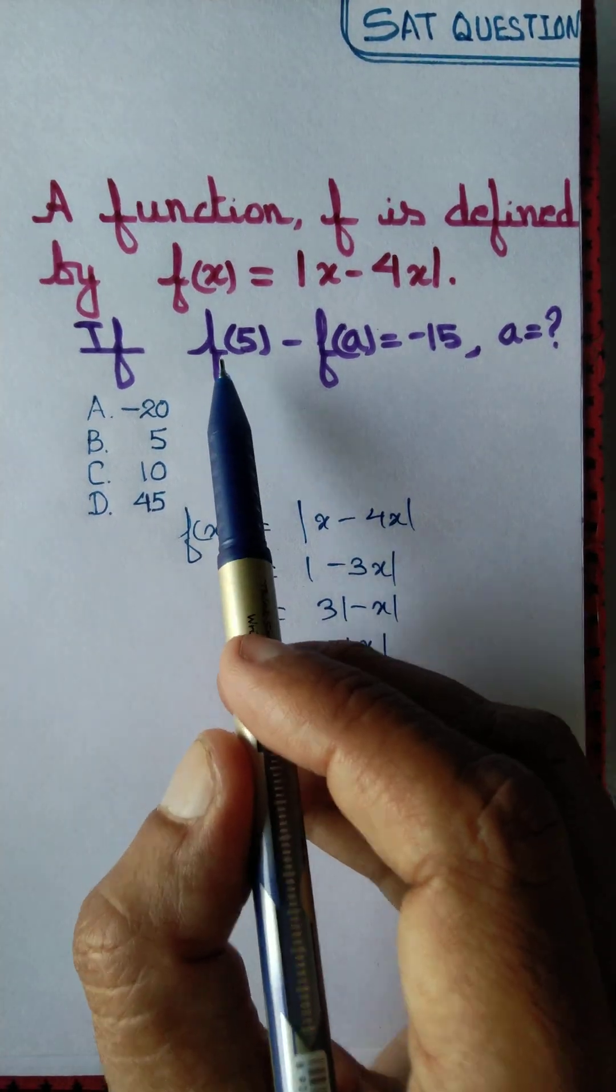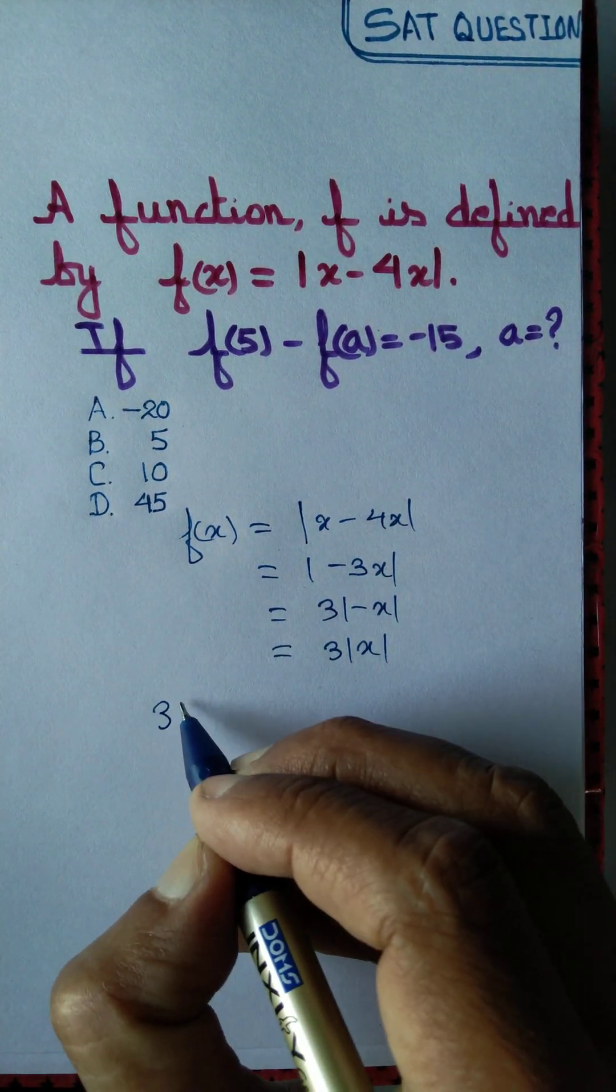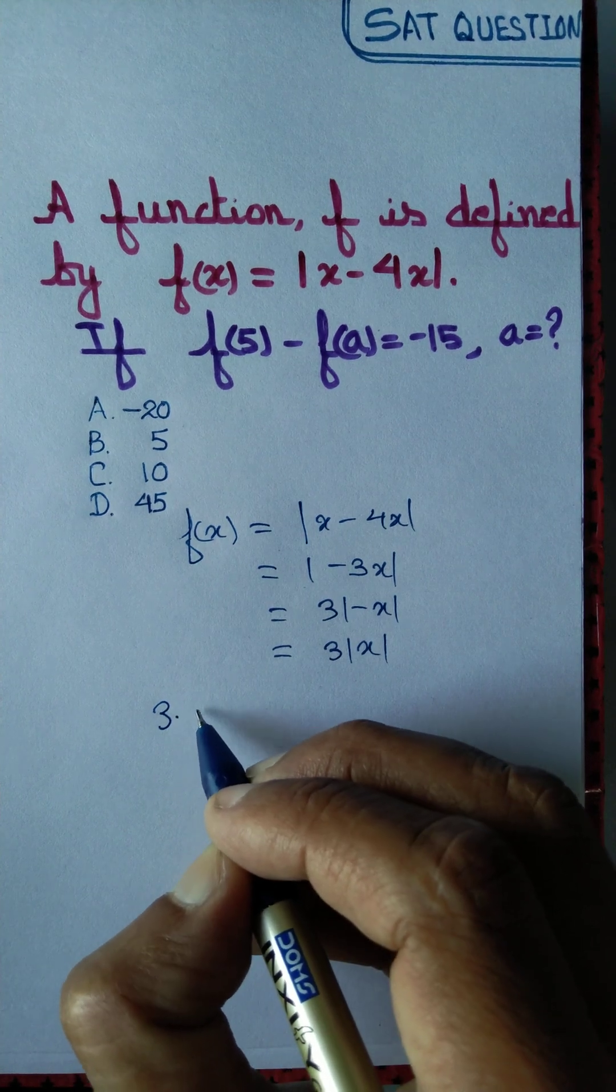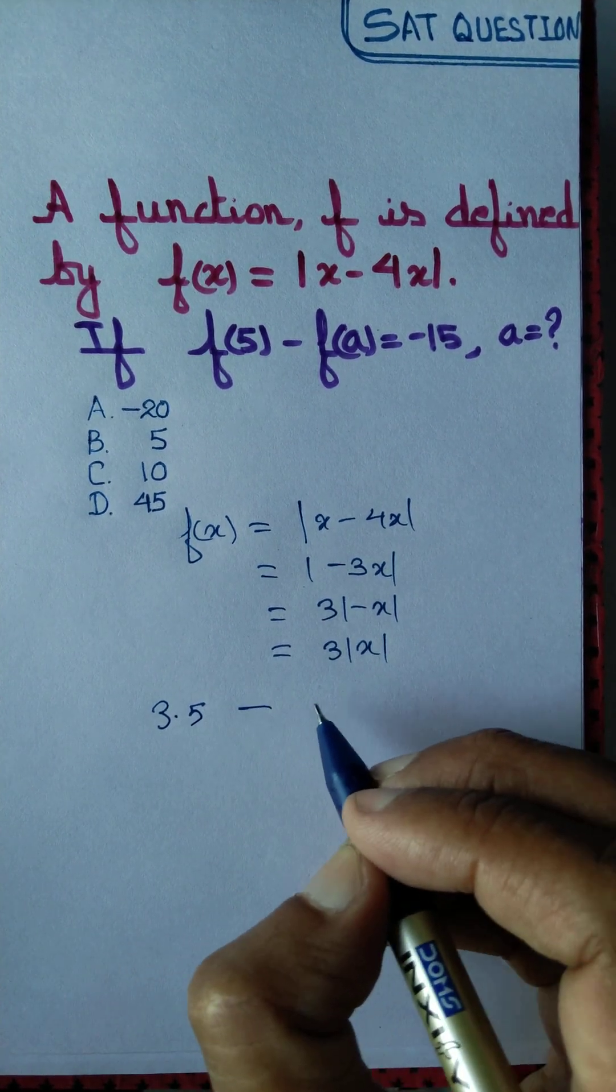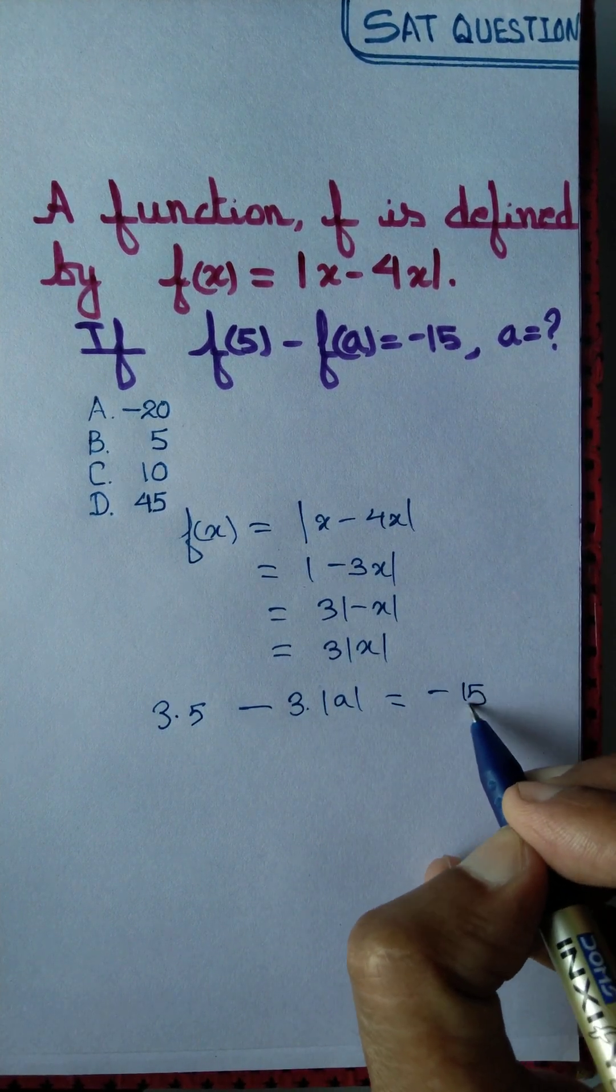And then we got f of 5 minus f of a equal to minus 15. That is 3 times modulus of 5, which is simply 5, minus f of a, 3 times modulus of a, equal to minus 15.